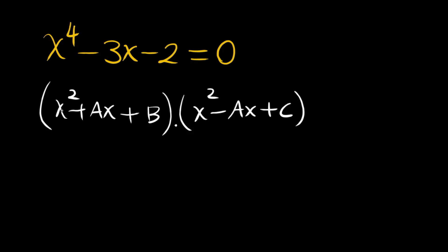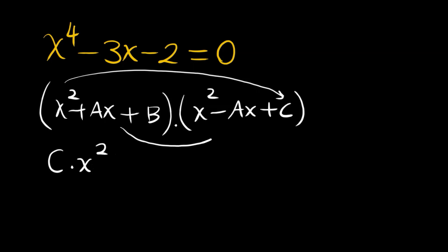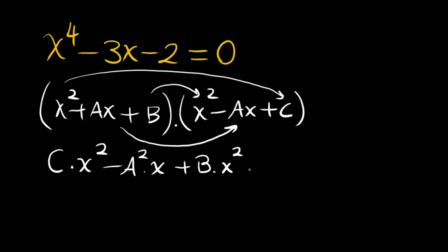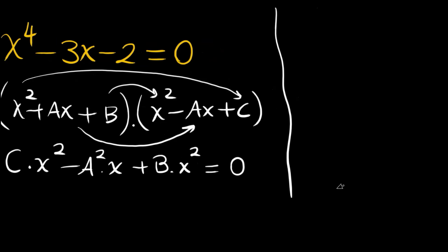We have x to the power of 4 and we've cancelled x cubed terms. Now let's find the x squared terms. The x squared contribution comes from C times x squared, minus a squared times x squared, and B times x squared. Since there is no x squared term in the original equation, C minus a squared plus B equals 0.